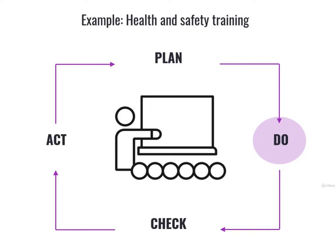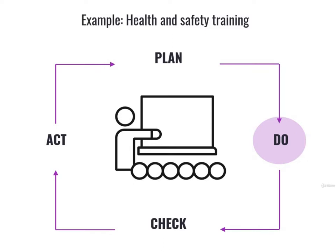Second step: Do. In our example, the do step is the actual training — having your workers attend courses in which they will learn the best practices about health and safety. To be specific: Worker A, of course, doesn't have to attend any course. Worker B attends a basic OHS training. Worker C attends a specific machinery training — to each his own.